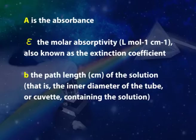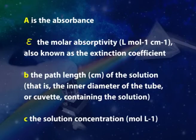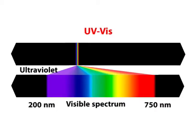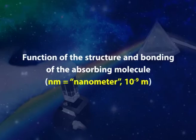B is the path length in centimeters of the solution, that is the inner diameter of the tube or cuvette containing the solution. C is the solution concentration expressed in mole per liter. The ability of a molecule to absorb radiation of a particular wavelength within the range of 200 to 750 nanometers — the ultraviolet-visible spectrum, often abbreviated UV-VIS — is a function of the structure and bonding of the absorbing molecule, where nanometer equals 10 to the power minus 9 meter. The collection of readings over a wavelength range is called the absorption spectrum. The absorption spectrum provides information that helps identify the absorbing species, known as qualitative analysis. The quantity of radiation absorbed at a given wavelength provides information about the concentration of the absorbers through Beer's law, known as quantitative analysis.